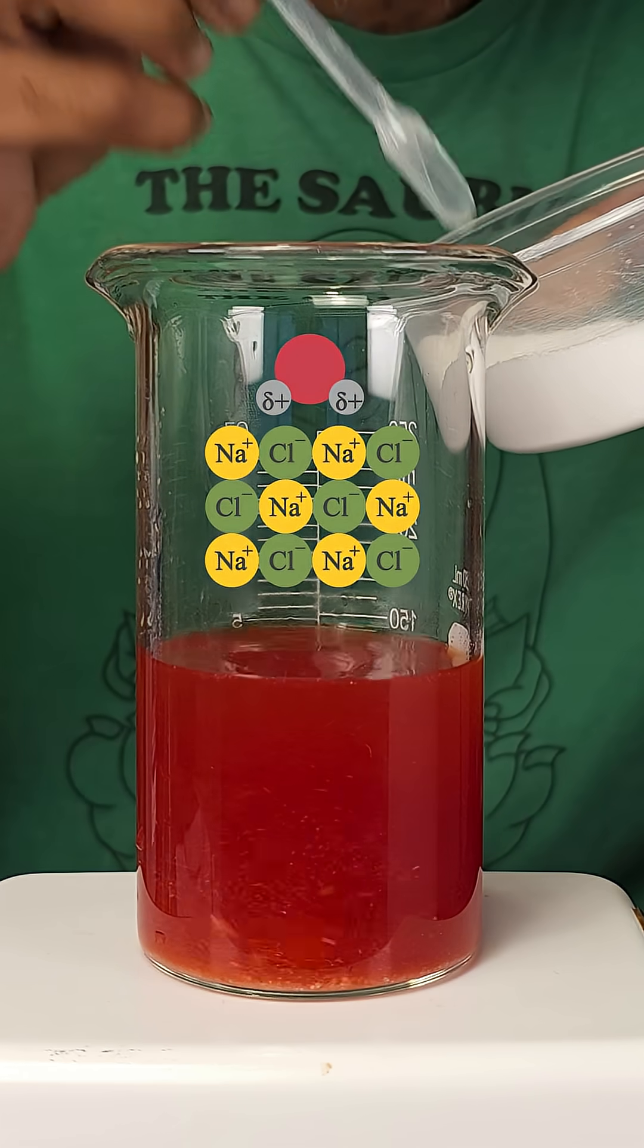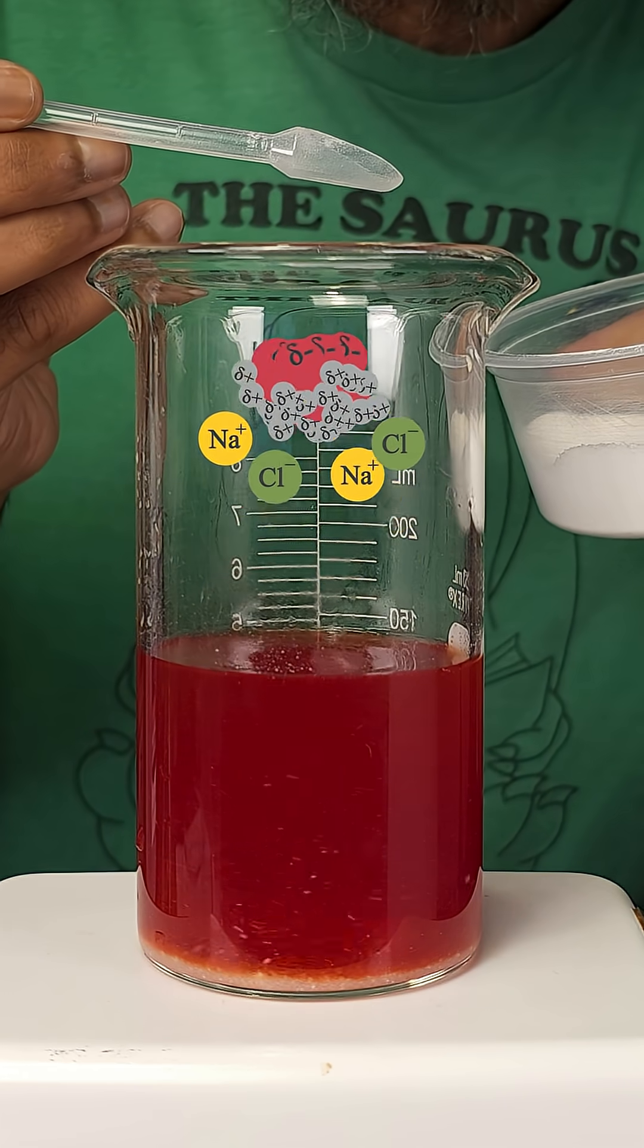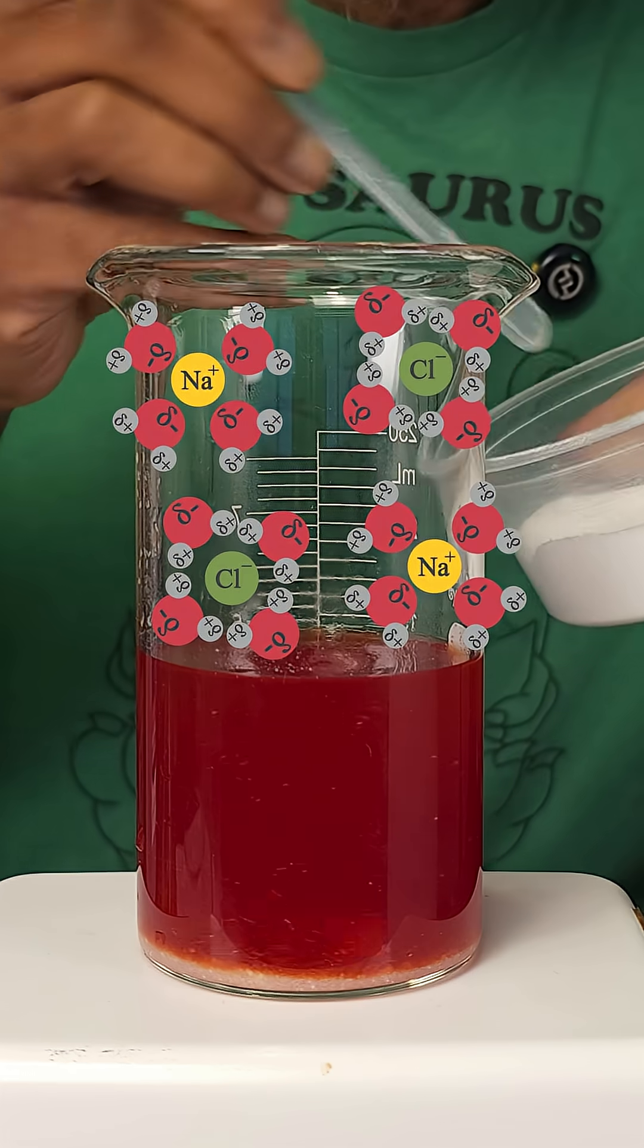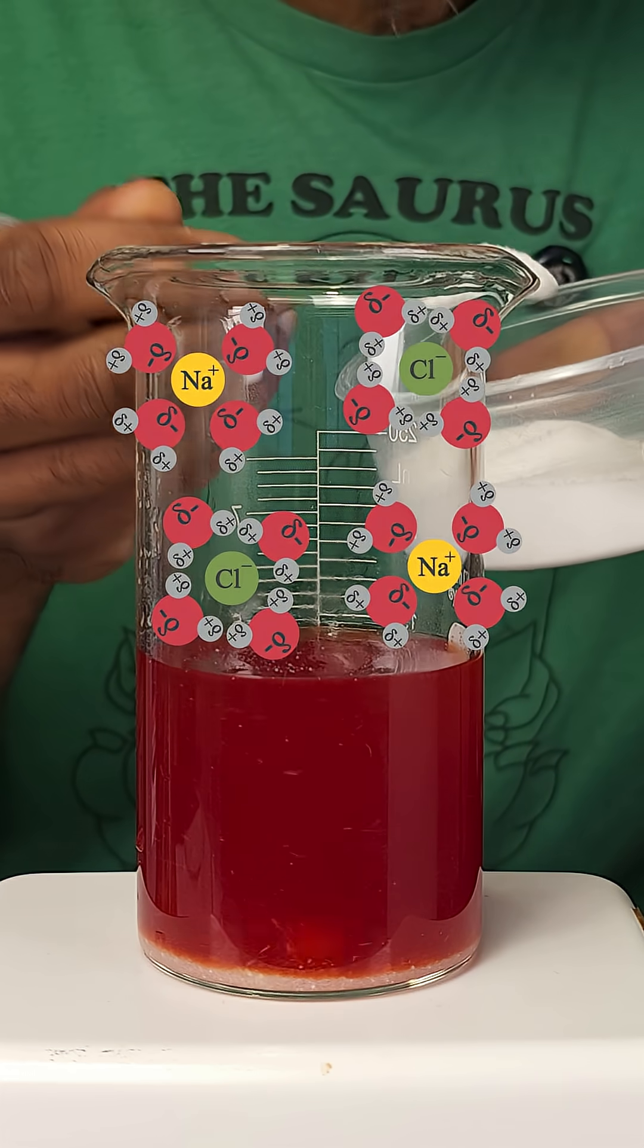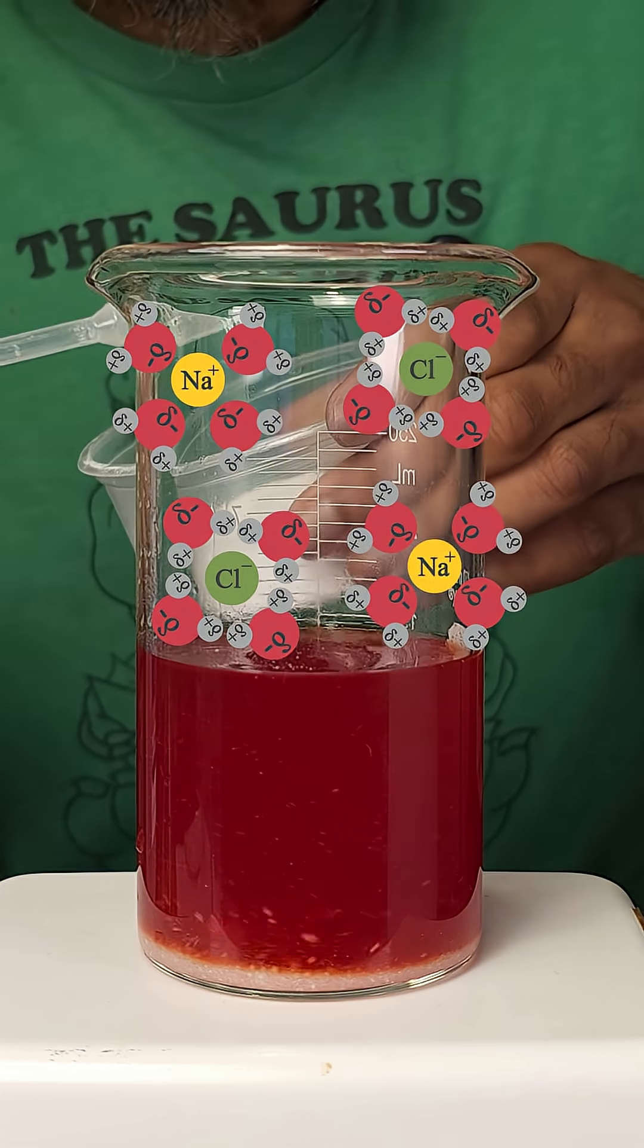Because water has a slightly positive end and a slightly negative end, what's called a dipole. So the water molecules surround the ions from the crystal lattice and point their positive end at the negative anions and their negative end at the positive ions in the lattice.